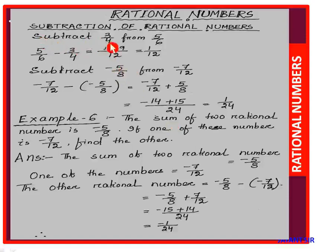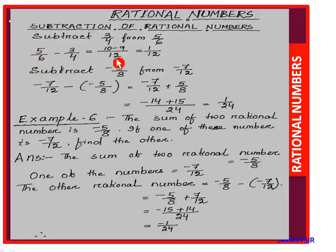First question: subtract 3/4 from 5/6. 'From 5/6' means we write 5/6 first, subtract means minus 3/4. The LCM of 6 and 4 is 12. 12 divided by 6 equals 2; 2 into 5 equals 10.